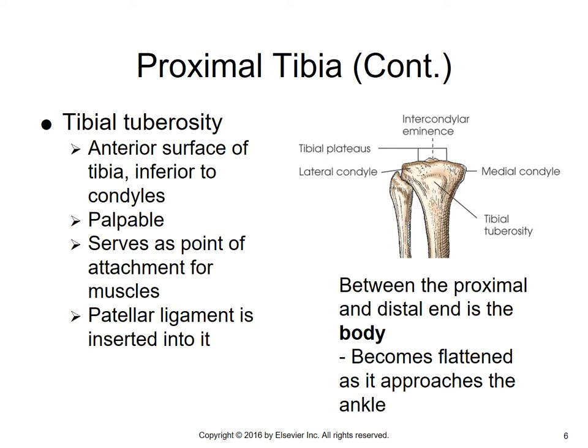A question you sometimes see on exams or the registry regarding the tibial tuberosity and Osgood-Schlatter's disease would be: what projection would best demonstrate Osgood-Schlatter's? And that would be the lateral. Because if the tibial tuberosity is pulled away from the body, and you turn the leg laterally and look at it, you would see that separation.